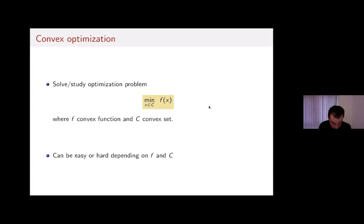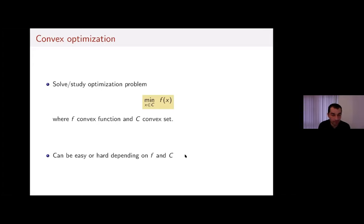Convex optimization problems can be easy or hard, depending essentially on the function f and the convex set. Not all convex optimization problems are easy. Some are hard, and the hardness usually comes from the constraint set c being a hard constraint — a convex set we cannot characterize efficiently, for which we cannot test membership efficiently, and so on.